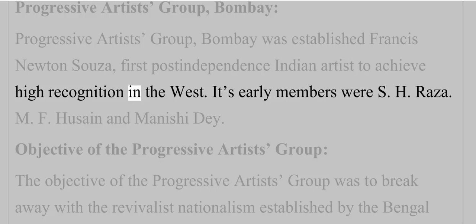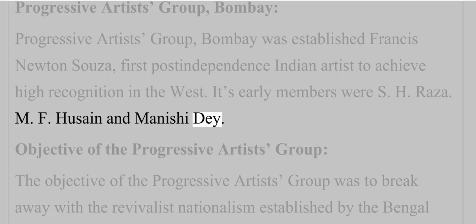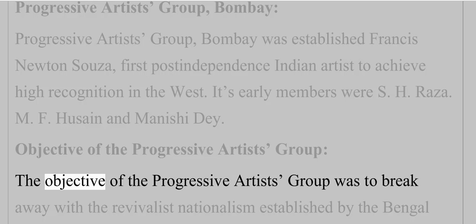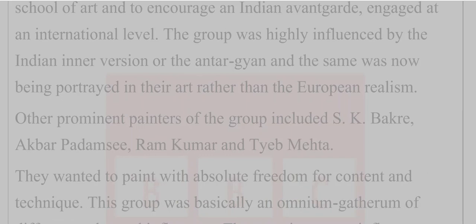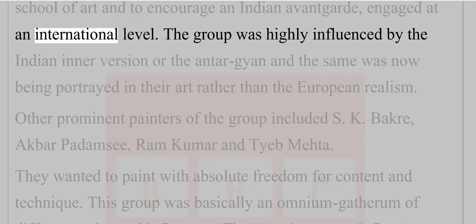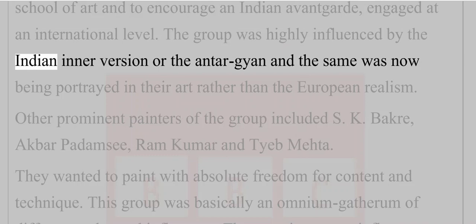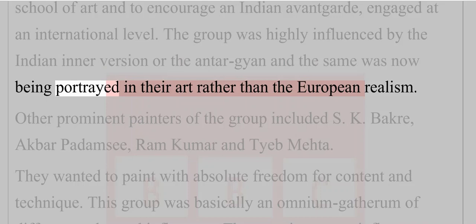The Progressive Artists Group Bombay was established by Francis Newton Souza, the first post-independence Indian artist to achieve high recognition in the West. Its early members were S.H. Raza, M.F. Hussain, and Manishideh. The objective of the Progressive Artists Group was to break away with the revivalist nationalism established by the Bengal School of Art, and to encourage an Indian avant-garde engaged at an international level. The group was highly influenced by the Indian inner vision, or the Antargyan, which was now being portrayed in their art rather than European realism.